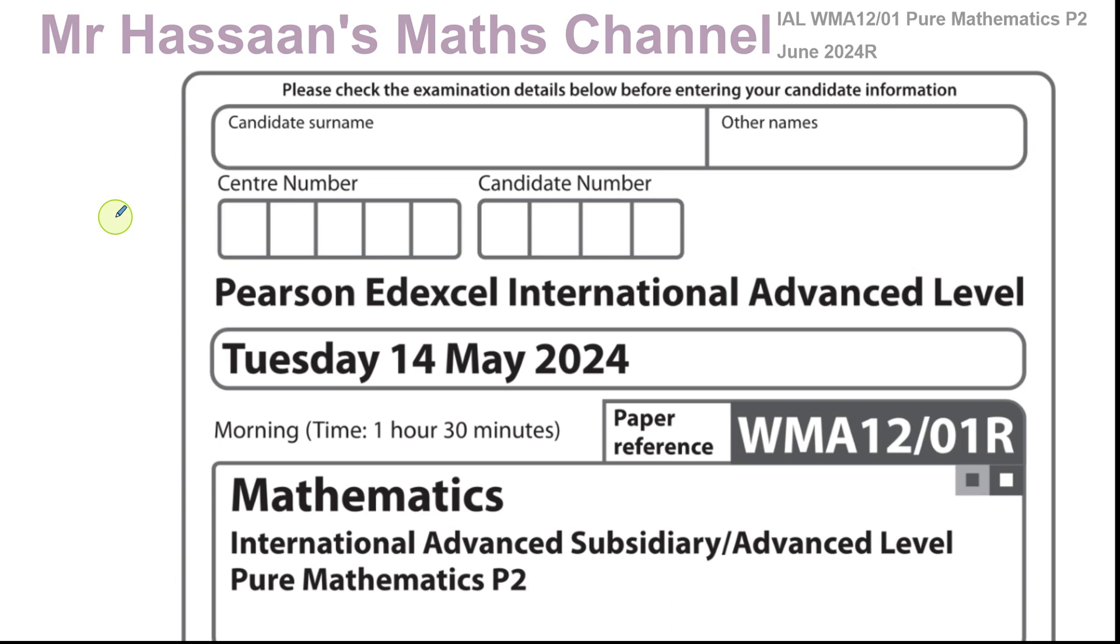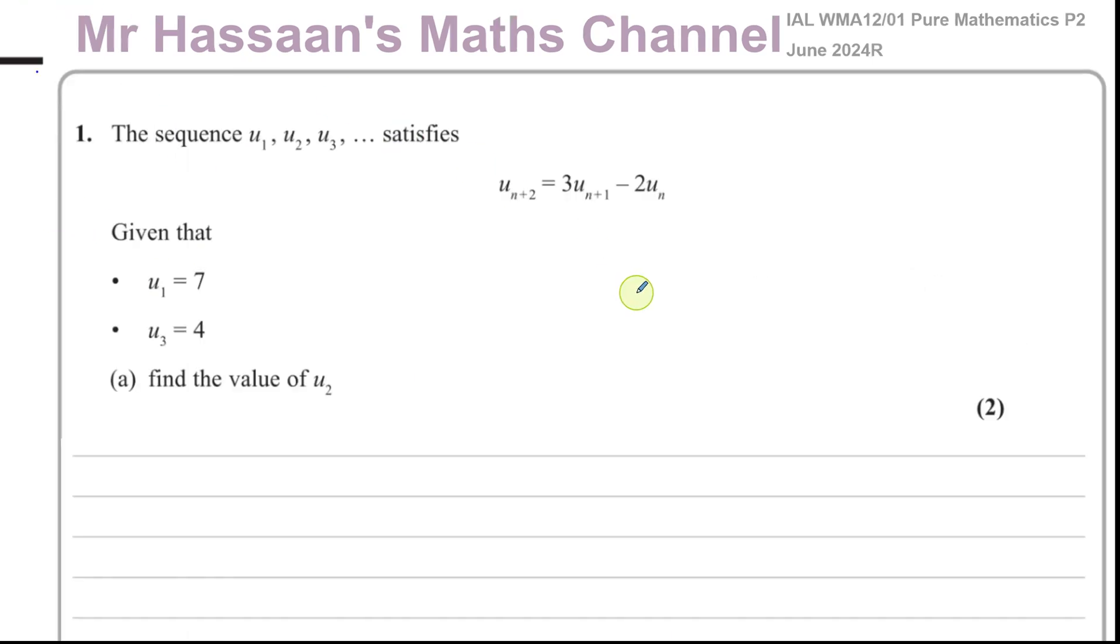Let's start with the first question. It says the sequence u₁, u₂, u₃ satisfies—this is called a recurrence formula—so uₙ₊₂ equals 3 times uₙ₊₁ minus 2 times uₙ, where u₁ equals 7 and u₃ equals 4. Find the value of u₂. This is a type of sequence which is a bit alien to students when they first come across it, but it's something that's perfectly logical and fine. You don't have to worry too much; it's not that difficult.